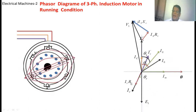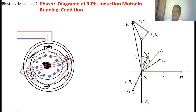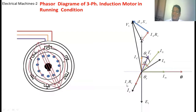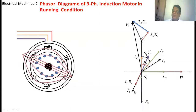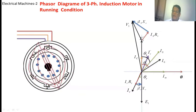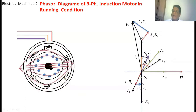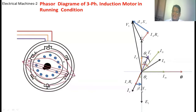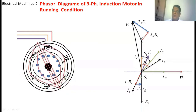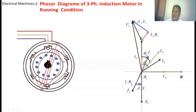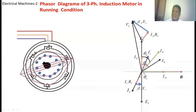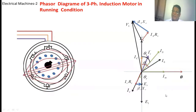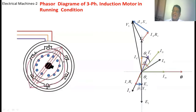On the rotor side at running condition, the rotor winding has resistance, so voltage drops across it as IR·RR, always in phase with IR. Perpendicular to that, we draw J·IR·XR, where IR is the per-phase rotor current at running condition and XR is the per-phase rotor leakage reactance at running condition. The phasor sum of IR·RR and J·IR·XR equals ER — the voltage induced in the rotor winding at running condition, which compensates both the resistance drop and the leakage reactance drop.